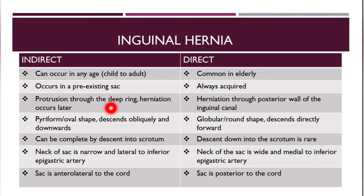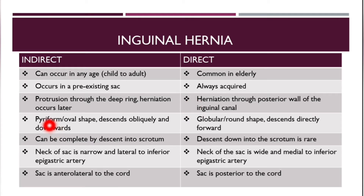Indirect hernia occurs in a pre-existing sac, but direct hernia is always acquired. Indirect hernia protrudes through the deep inguinal ring, while direct herniation occurs through the posterior wall of the inguinal canal.